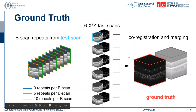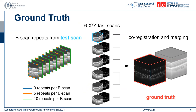Evaluating the performance of our iterative reconstruction is not straightforward. The lack of a ground truth with little noise poses a significant challenge. In order to obtain a ground truth, we acquired six X and Y-fast scan pairs of a volunteer's eye, where every B-scan was repeatedly scanned 10 times. In practice, this would lead to an overly long scan time, and patients' eyes would exhibit too much motion, but this problem can be mitigated with a young, healthy volunteer with good fixation.